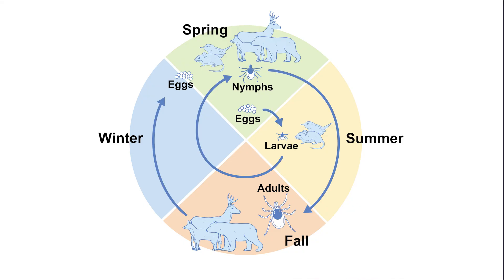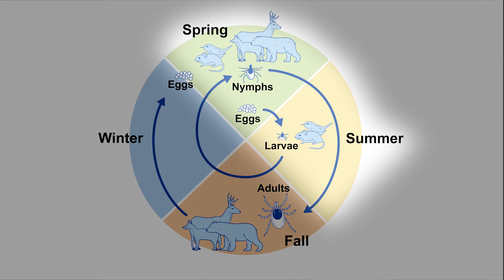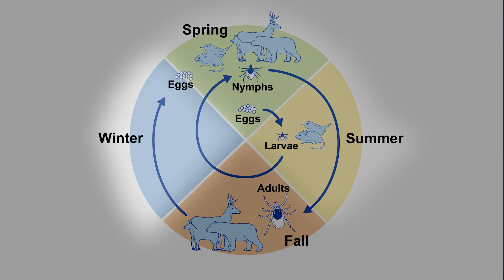For example, most ticks in the Northeast are active in the spring and summer. Therefore, control methods against ticks will be most effective during these seasons instead of in the winter when they are less active.